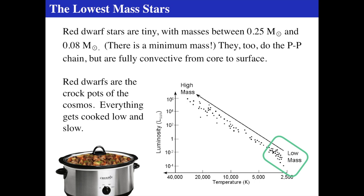These red dwarfs, the most populous stars in the cosmos — making up almost half the stars in the universe — are like little crockpots that cook everything low and slow. They live enormous lifetimes.